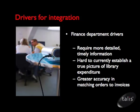Some of the other key drivers will come from the finance department, and these drivers will of course be slightly different. They may, for instance, require more detailed and timely information from the library service than they're able to get at the moment. It may also be hard for them to establish a true picture of what the library is spending at any given time. The finance department may also need a higher level of accuracy in being able to match things together like orders and invoices.